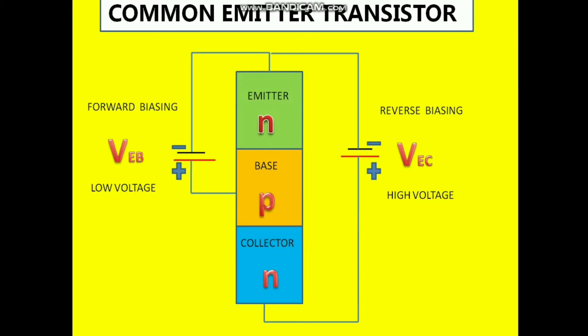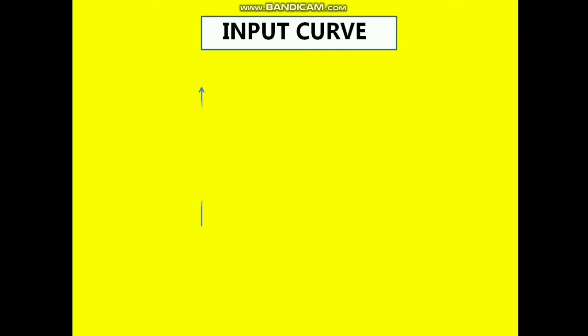Now we will discuss all these results with the help of graphs — the input graph, output graph, and the transfer graph. The first graph is the input graph. The input graph is between the input current and the input voltage applied. The input current is del IB and the input voltage applied is del VBE, the base-emitter voltage. From this graph I will calculate the input resistance, which is del VBE upon del IB.